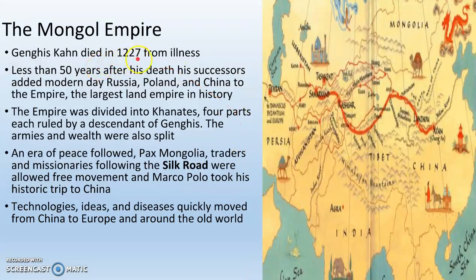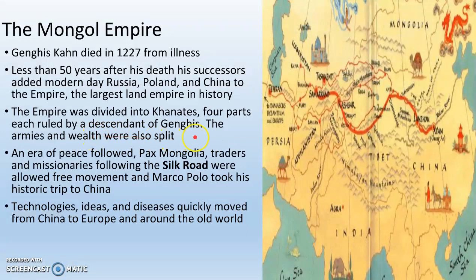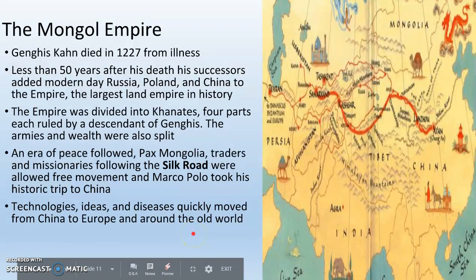Genghis Khan died in 1227 from illness. Less than 50 years after his death, the Mongols had conquered all of modern-day Russia, Poland, and China — the largest land empire in history, larger than anything Alexander the Great or anyone else had put together. The empire was divided into four khanates, each ruled by a descendant of Genghis, generally his sons, with armies and wealth also split. An era of peace followed called Pax Mongolia. Traders and missionaries were allowed to follow the Silk Road, allowing the transition of goods, religion, and ideas. Technology and diseases quickly moved from China to Europe and around the Old World.